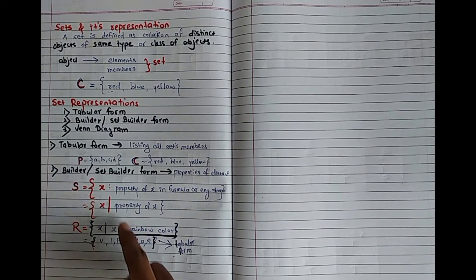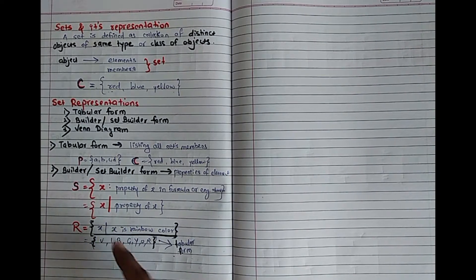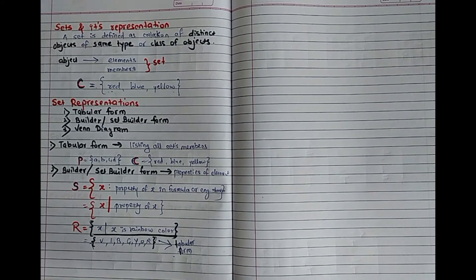And write it in the format, then it will be set builder representation. And last, Venn diagram. So in Venn diagram, every set is in the circle.